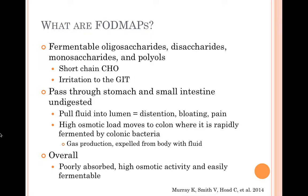All four categories are short-chain carbohydrates that have been found to cause GI distress. These short-chain carbohydrates pass through the stomach and small intestine undigested, pulling fluid into the lumen of the GI tract, which results in abdominal distension and pain.